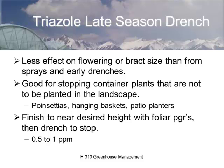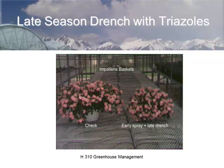On a crop of impatiens, the consumer wants the plants to grow when planted, so you wouldn't use late season PGRs on plants going into the landscape. Here's a good example using an impatiens basket: the left plant has no plant growth regulator application, while the right has an early spray followed by a late drench — giving a fuller, more uniform, more aesthetically pleasing plant. Which one would you buy? The one on the right.